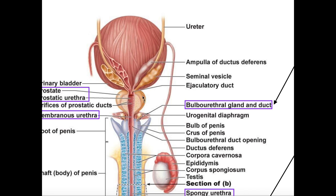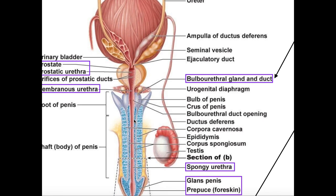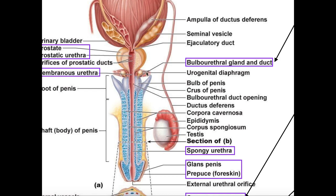This gland here is the prostate gland. The part of the urethra that runs through the prostate gland is the prostatic urethra, so the ejaculatory duct empties into the prostatic urethra. Going a bit further down, we have these muscles — this is the urogenital diaphragm. We'll have an entire video looking at those muscles and what they do. The part of the urethra that runs through the urogenital diaphragm is the membranous urethra, which is the shortest segment of the urethra in males and also the middle one.